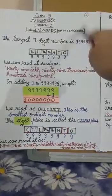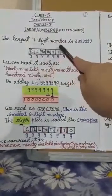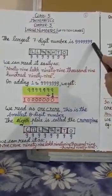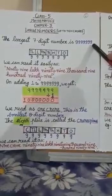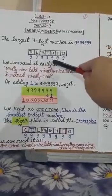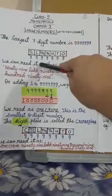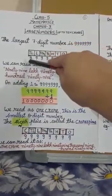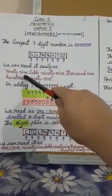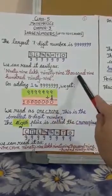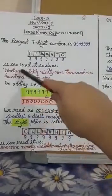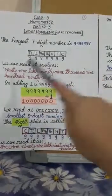The largest seven-digit number is 9,99,999 — that is seven nines. We write it in the place value chart: ones place nine, tens place nine, hundreds place nine, thousands place nine, ten thousands place nine, lakhs place nine, ten lakhs place nine. We read it as ninety-nine lakh ninety-nine thousand nine hundred ninety-nine.